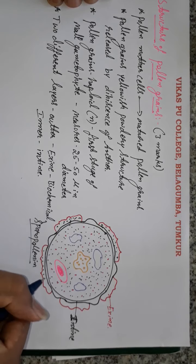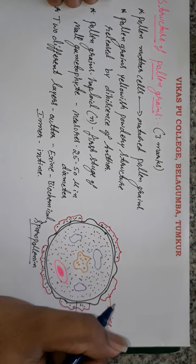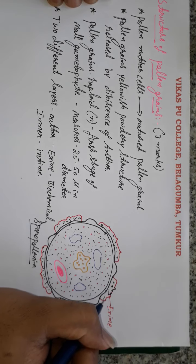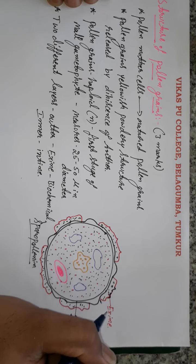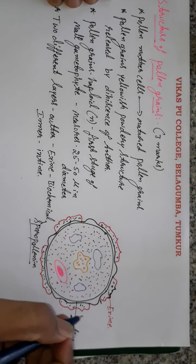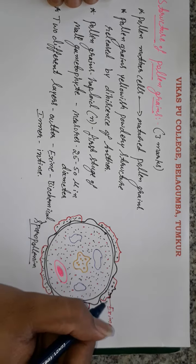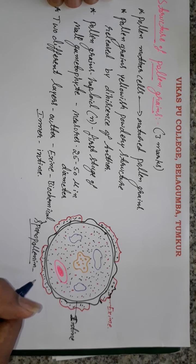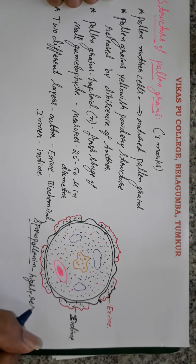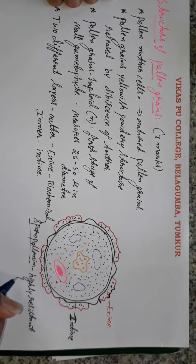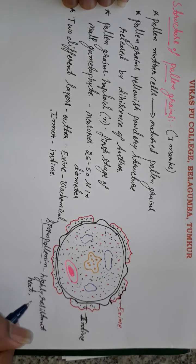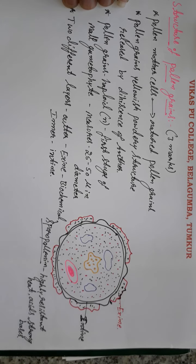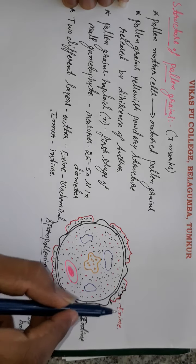Because of sporopollenin, the exine layer is highly resistant to heat, to acid, and to strong bases. This chemical resistance is due to the presence of sporopollenin within the exine layer. The exine also has outgrowths such as ridges and spines.